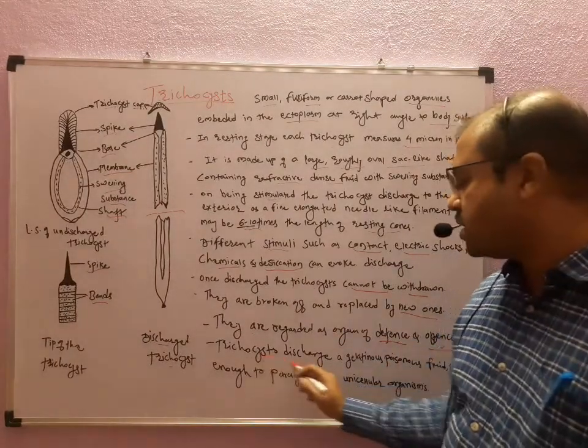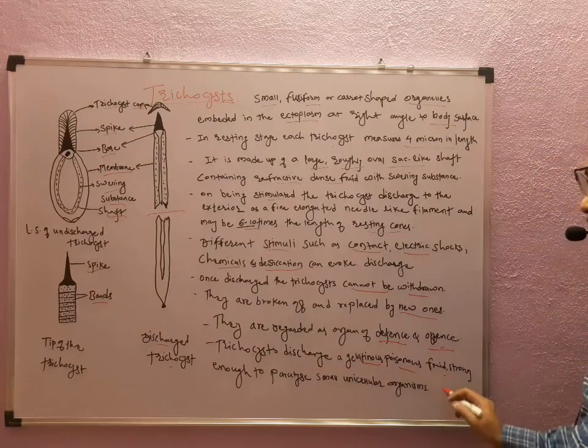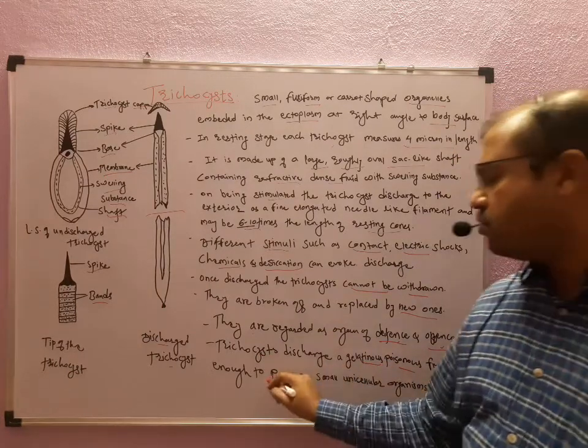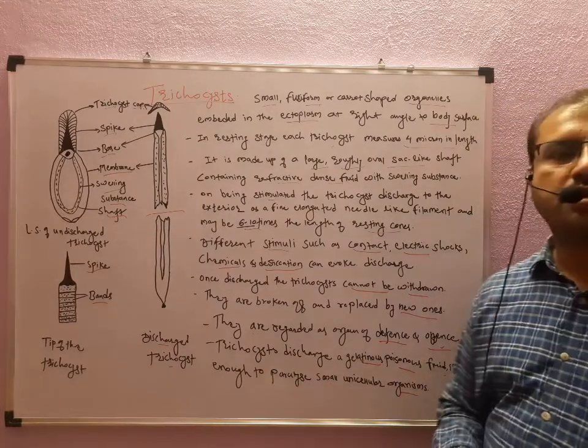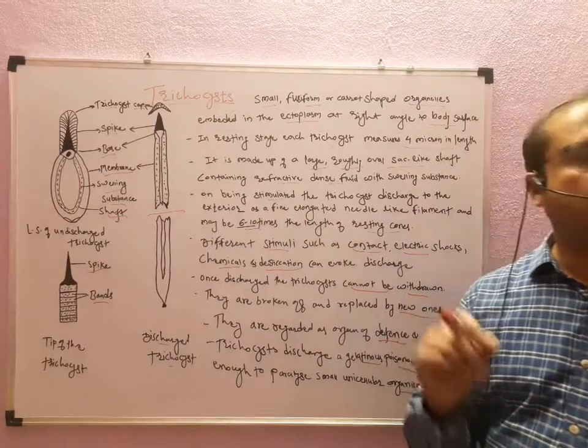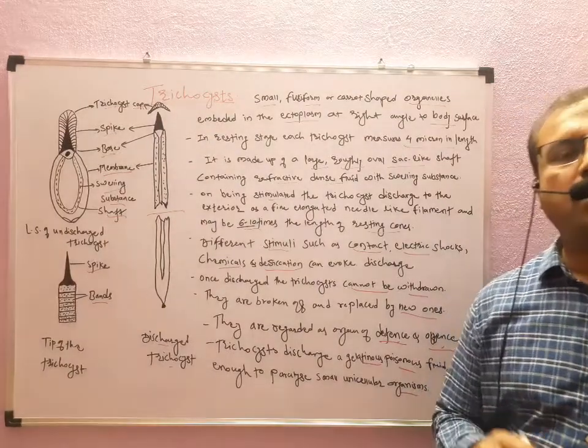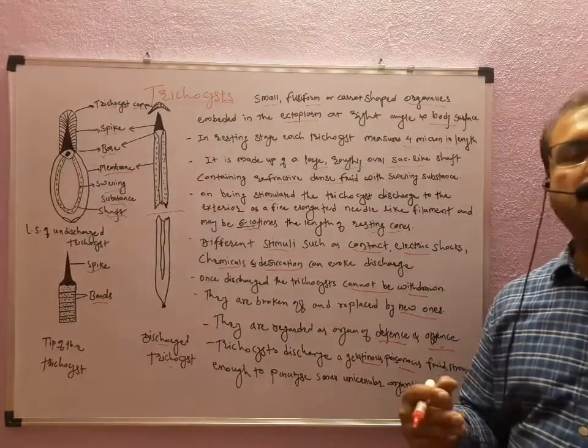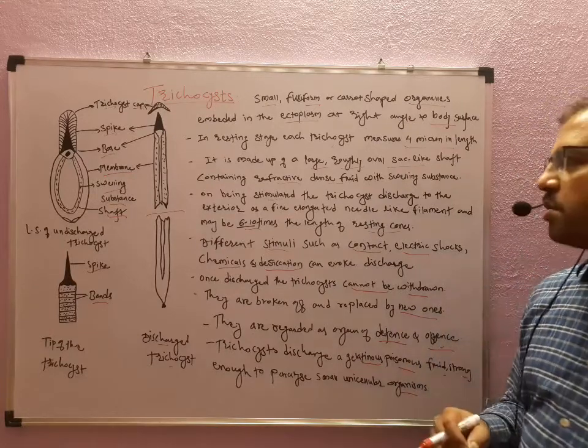This trichocyst discharges a gelatinous poisonous fluid which is strong enough to paralyze small unicellular organisms. Though this trichocyst paralyzes unicellular organisms, it is much more effective over certain individuals like Didinium, which feeds on paramecium.